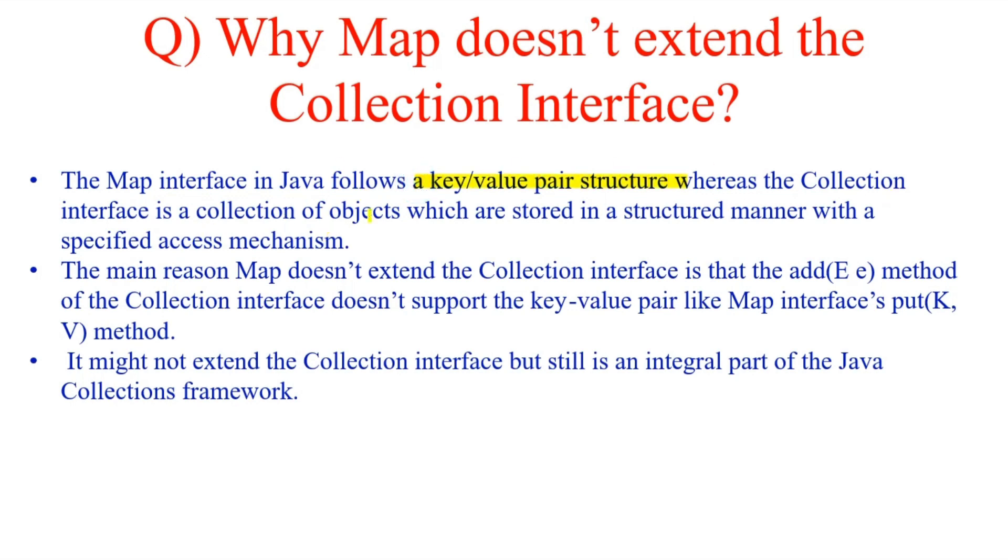Whereas all the Collection interfaces are actually a collection of just objects which are stored in a structured manner with a specific access mechanism. And the main reason why Map doesn't extend this is... basically, how do you add elements in a collection? If you add an element in a collection, you always use the add method where you pass an object, and that particular E object will be added to the Collection interface.